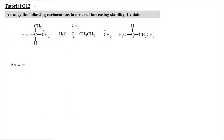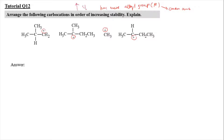Moving on to question 12, we have to arrange the carbocations in order of increasing stability. A carbocation is a positively charged carbon, and to arrange them in terms of stability, the most stable one is the one that has more alkyl groups. Alkyl group means carbon chain — more alkyl groups means more stable. So in this case, the most stable is the one where the C⁺ is attached with one, two, and three alkyl groups.